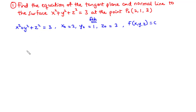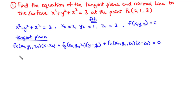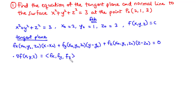First, let's find the tangent plane equation. For the tangent plane, we know the generalized form is: Fx of x0, y0, z0 times x minus x0, plus the corresponding y and z terms equals 0. To begin, we are going to find the gradient vector, and in doing so we will find Fx, Fy, and Fz at the point x0, y0, z0. The gradient vector of the function is given by the vector with components Fx, Fy, and Fz.